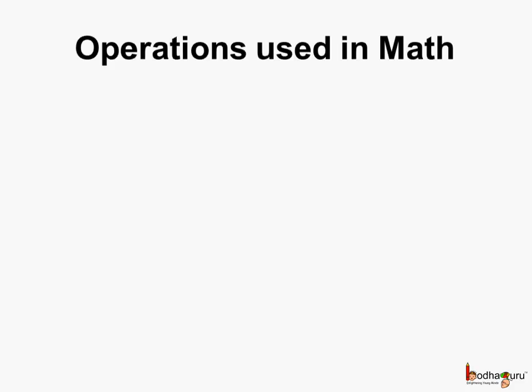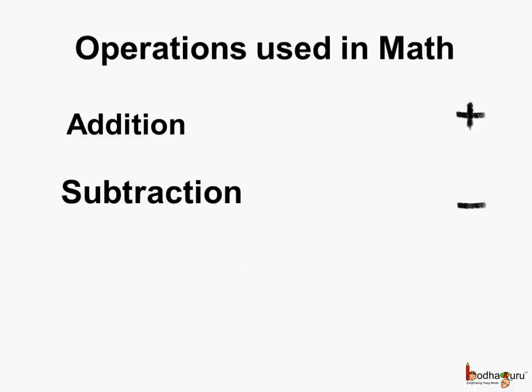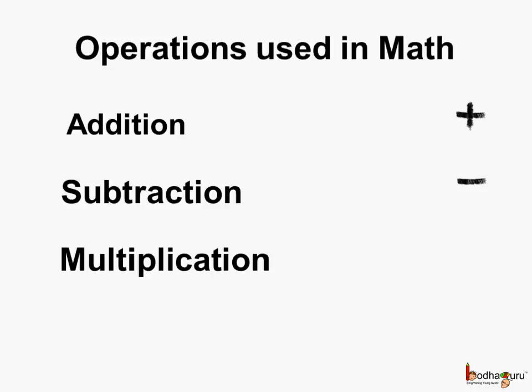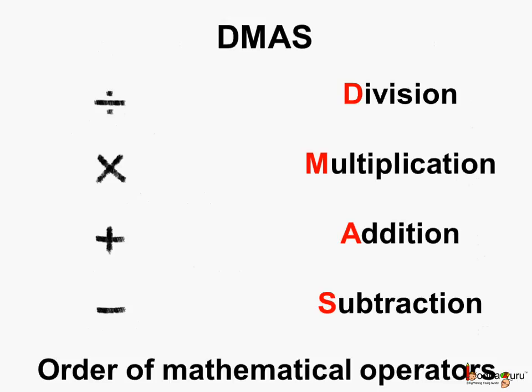What are the operations used in maths? We know the four fundamental operations are addition, subtraction, multiplication and division. And which is the order in which they are performed when they all come in an expression? We know this rule is called the DMAS rule, which specifies the order of mathematical operators.